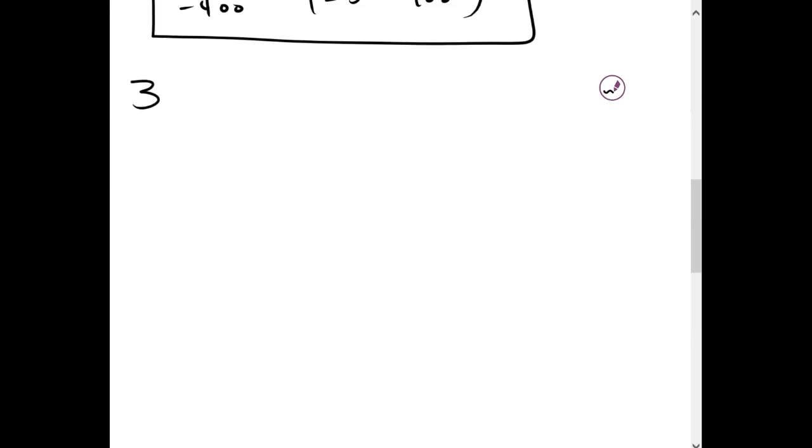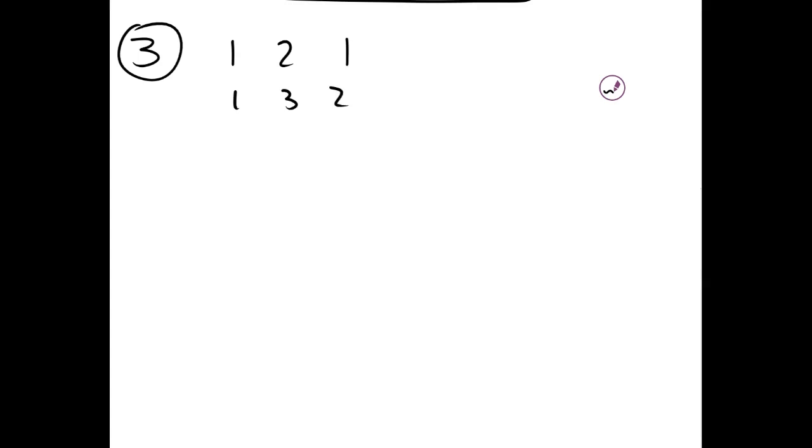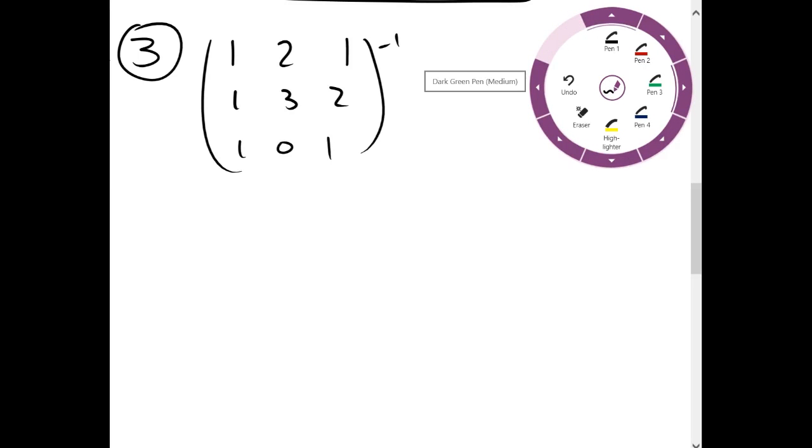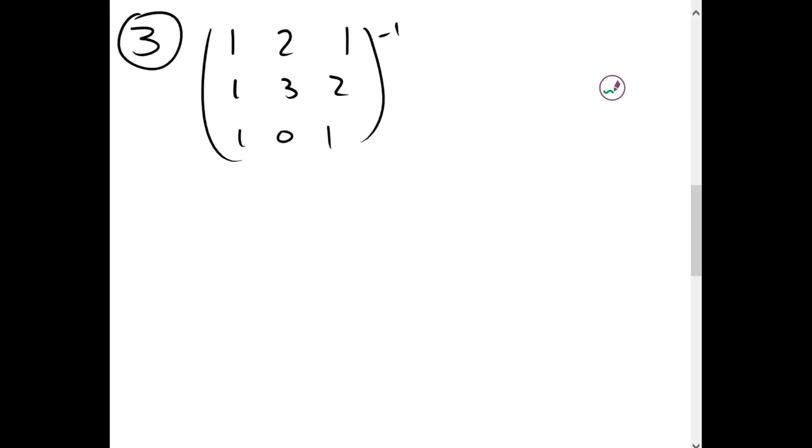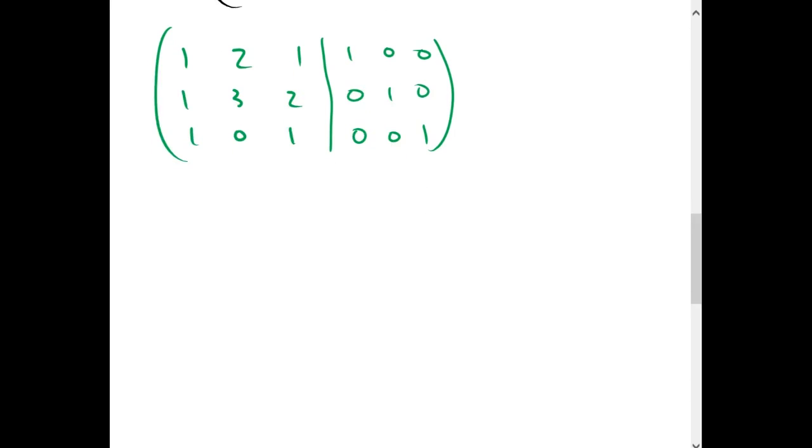I'm gonna do a 3x3 matrix and in this case can't use Cramer's rule so we're gonna have to actually do this out. So we want to find the inverse of this. We're gonna have to use row reduction to do that. So the way we do that is we make an augmented matrix with the matrix in question on one side and the identity on the other side. And now we just row-reduce.